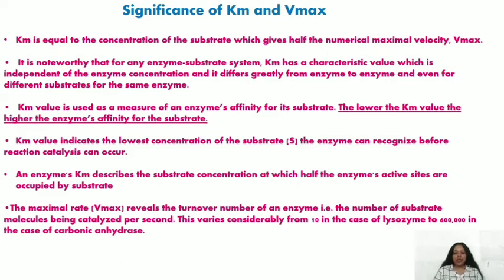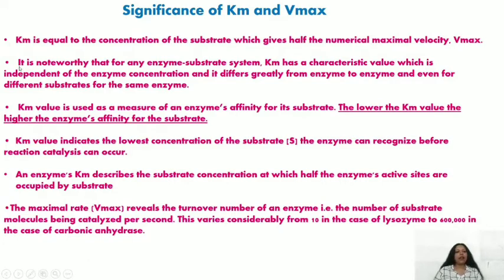It is very important to discuss the significance of Km and Vmax. First, Km (Michaelis-Menten constant) equals the concentration of substrate which gives half the maximum velocity, Vmax. Second, for any enzyme-substrate system Km has a characteristic value which is independent of the enzyme concentration — Km does not change when you change enzyme concentration.